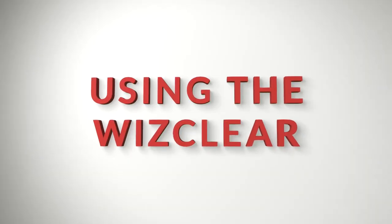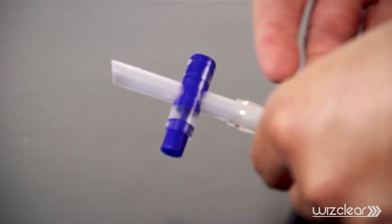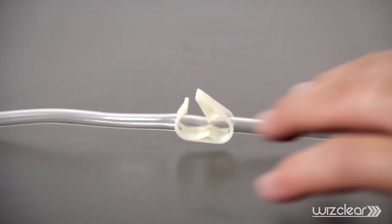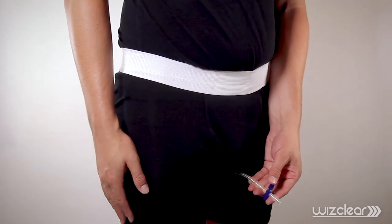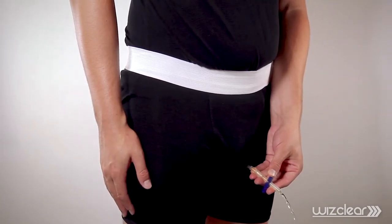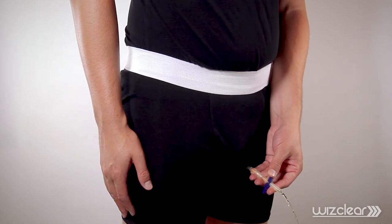Using the WizClear: Make sure the silent push-button valve is completely closed. Then, arm the device by opening the white arming clip. When you're ready to release the urine, push the silent valve and the urine will flow. We recommend practicing several times with water before using a synthetic urine sample.